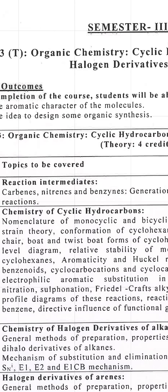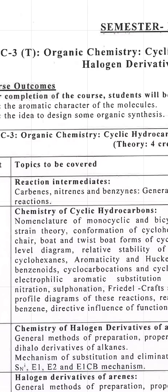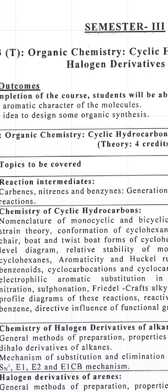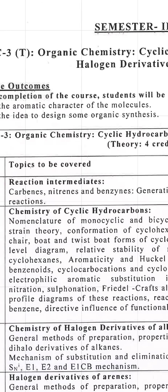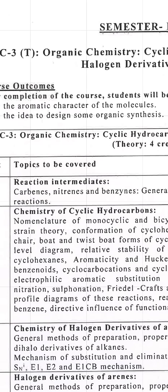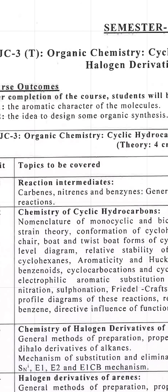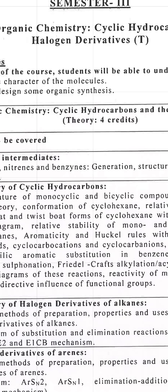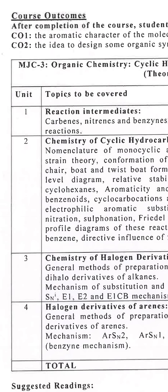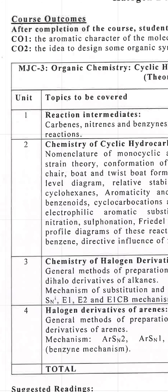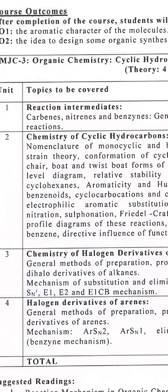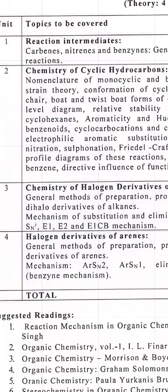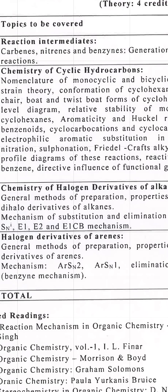The idea is to design some organic synthesis, and you will be able to identify specific chemical components and functional groups. This course on cyclic hydrocarbons and their halogen derivatives is a 3D 4-credit course. Topics to be covered: first — reaction intermediates; second — chemistry of cyclic hydrocarbons; third — chemistry of halogen derivatives of alkanes.